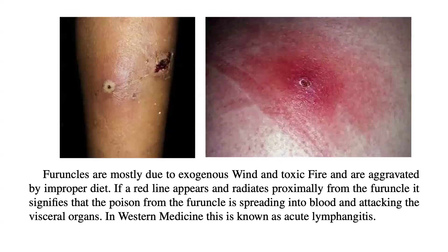Furuncles are mostly due to exogenous wind and toxic fire and are aggravated by improper diet. If a red line appears and radiates proximally from the furuncle, it signifies that the poison from the furuncle is spreading into blood and attacking the visceral organs. In Western medicine, this is known as acute lymphangitis.